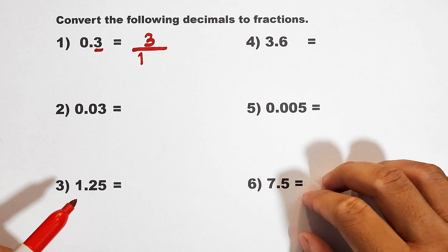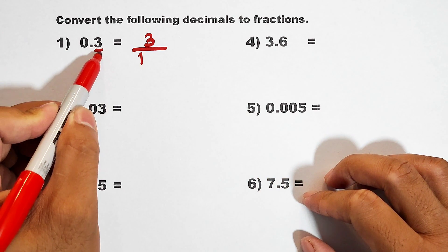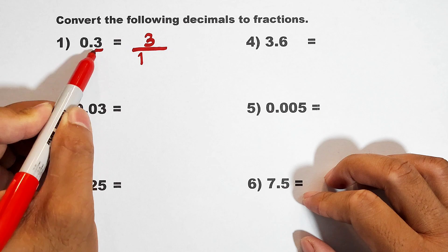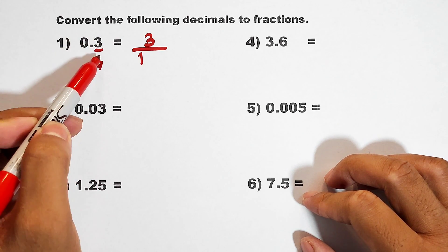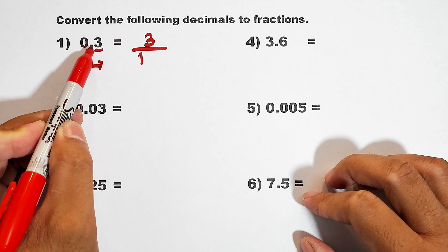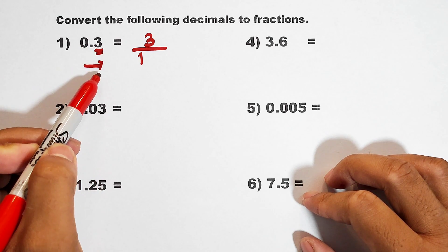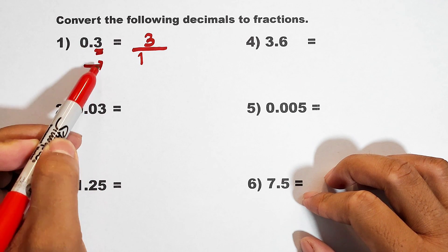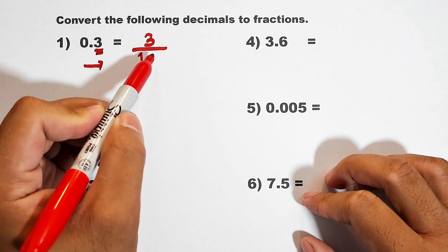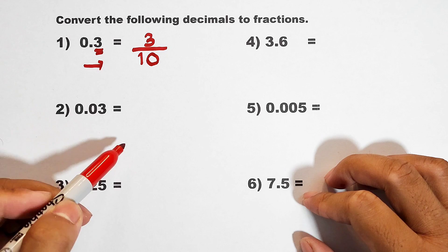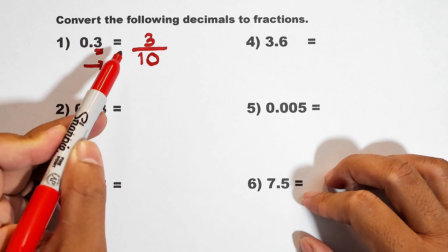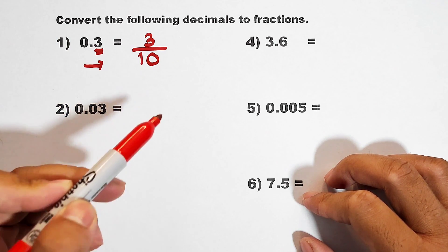Now, for the zeros, you will count the number of decimal places after this point going to the right. So as you can see, in 0.3, from this decimal point, we only have one decimal place, which is this one. So we will add a single zero. And as you can see, your 0.3 is equal to 3 over 10 as your fraction.